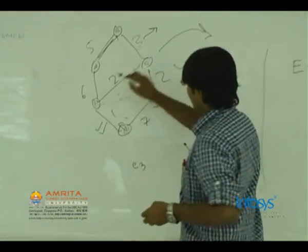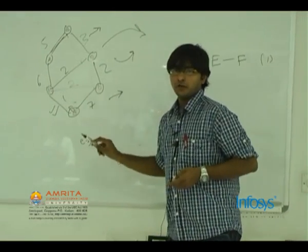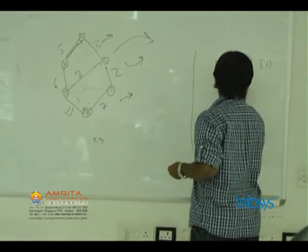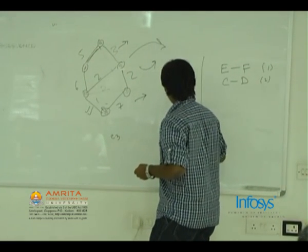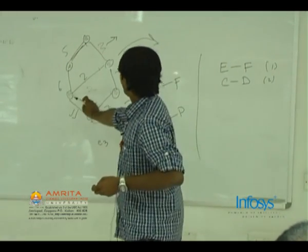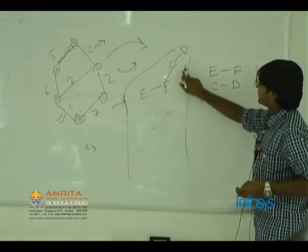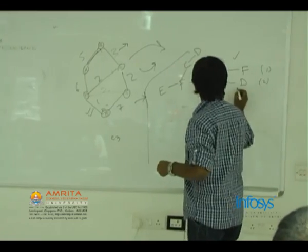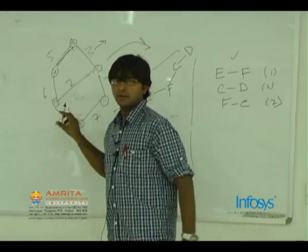The next edges of cost 2 are F-D and C-D respectively; we can choose either. We take edge C-D as part of the MST. Then the next edge is C-F, so we take that. Now E, F, C, D are already connected by the edges E-F, F-C, and C-D. The next minimum edge is F-D, and we continue this process.